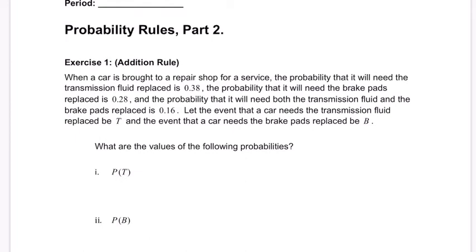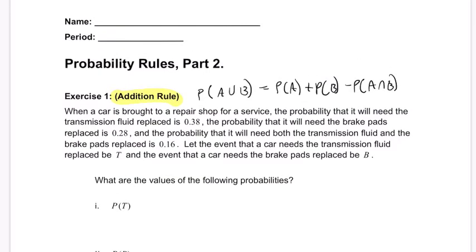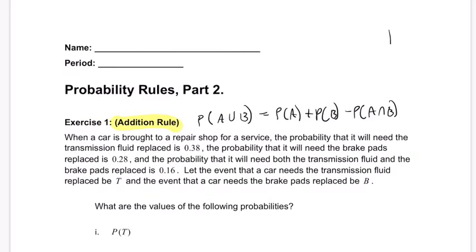Okay, so we're looking at what they're calling the addition rule right here, which is saying that if you look at the probability of, let's say, A or B, that equals the probability of A plus the probability of B minus the intersection of A and B. And an easy way to think about this is you can think of a Venn diagram.